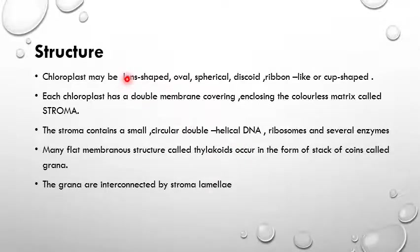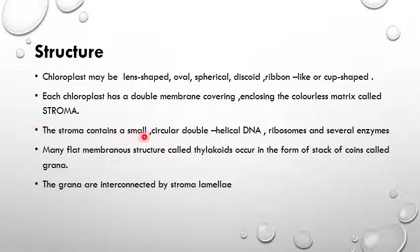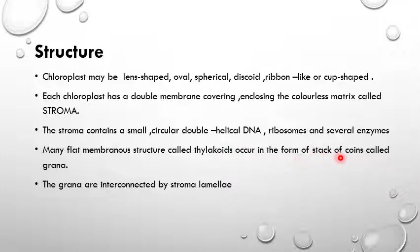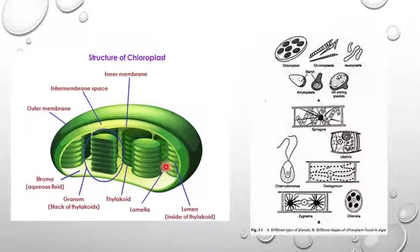The plastids may be lens-shaped, oval, spherical, discoid, ribbon-like, or cup-shaped. Each chloroplast has a double membrane covering enclosing a colorless matrix called the stroma. The stroma contains small circular double-helical DNA, ribosomes, and several enzymes — similar to mitochondria, both organelles have their own DNA and ribosomes. The inter-membrane space lies between the outer and inner membranes.